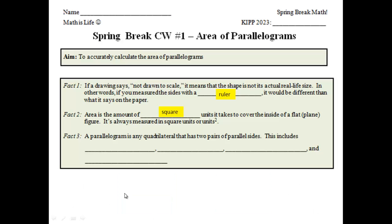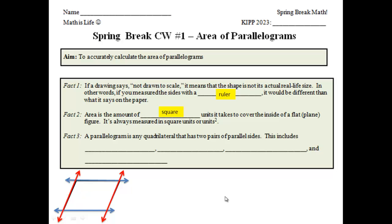Today our focus is on parallelograms. A parallelogram is any quadrilateral — four sides — that has two pairs of parallel sides. Let's check out some shapes. Here's a four-sided shape you probably remember as the traditional parallelogram. Does it have two pairs of parallel sides? Parallel sides, when drawn, never intersect or cross. There's one pair of parallel sides, and there's the other. So this parallelogram has two pairs of parallel sides. Parallelograms are quadrilaterals that have two pairs of parallel sides.